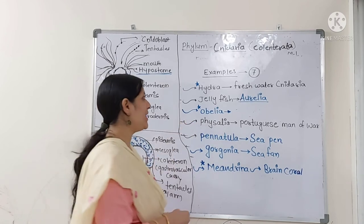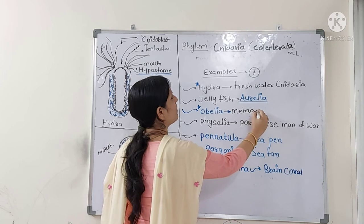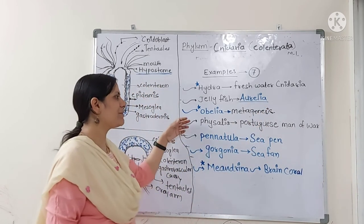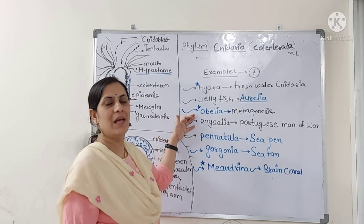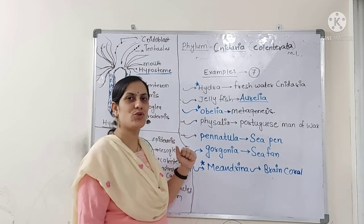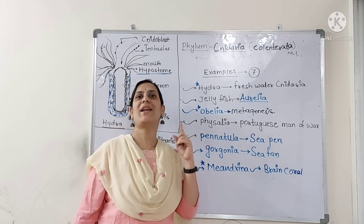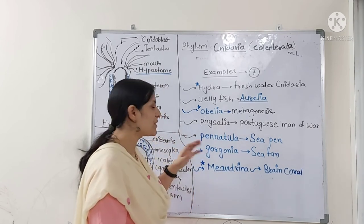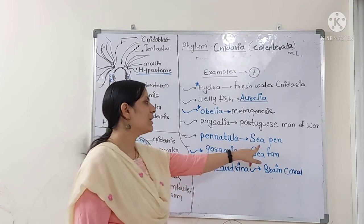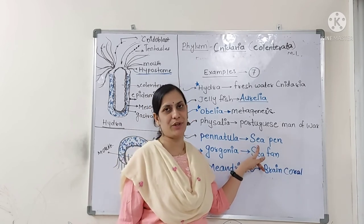Obelia is the cnidarian showing metagenesis, so please remember this special example. Physalia is also known as the Portuguese man-of-war because it has a colony with a number of tentacles. Next, there are three more examples: Pennatula, Gorgonia, and Meandrina. Pennatula is called sea pen — it looks like a feather pen, hence the name.